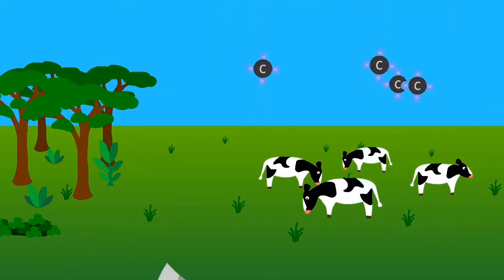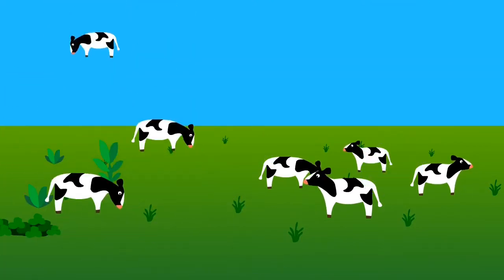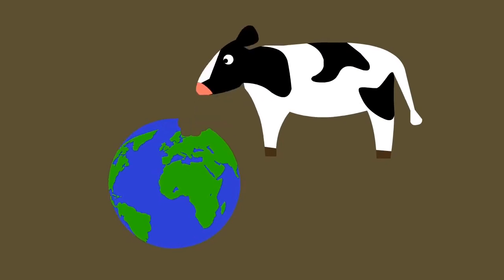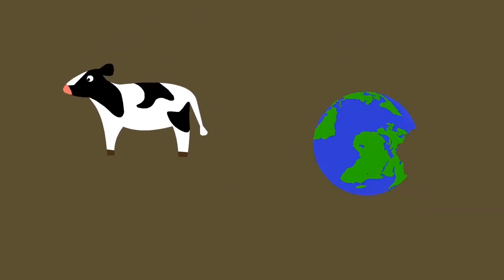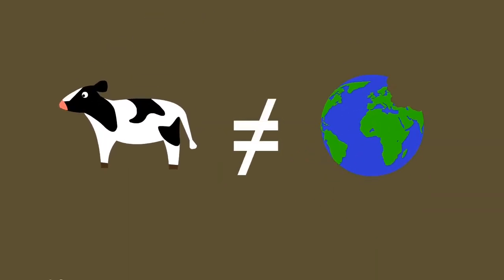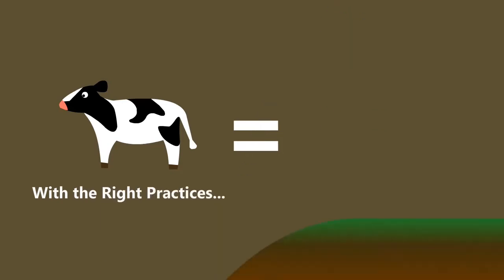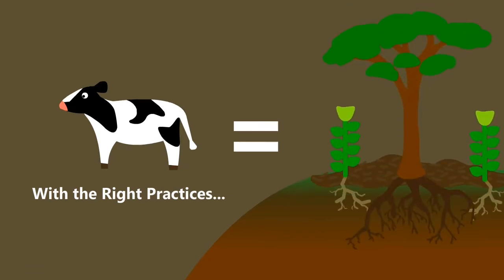From the release of methane to clearing forests for pasture land, cattle raising is known for being very environmentally destructive. But this is not inherent to grazing animals. If the right practices are put in place, enormous amounts of carbon can be sequestered into the ground, soil can be built, and even desertification can be reversed in a matter of years. Here's how it works.